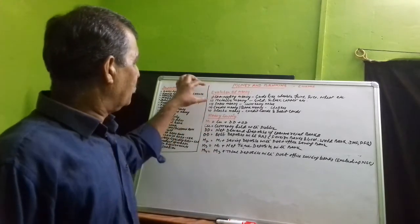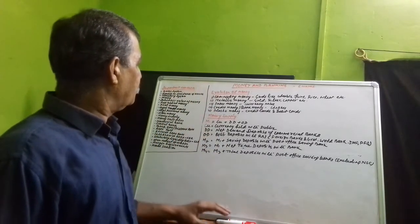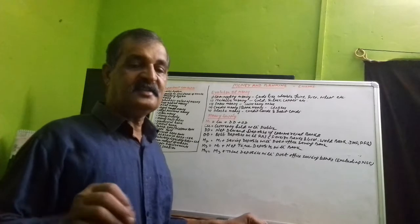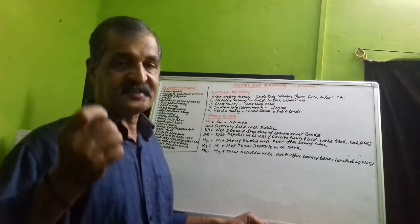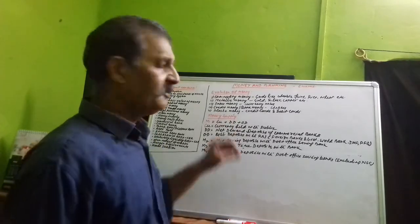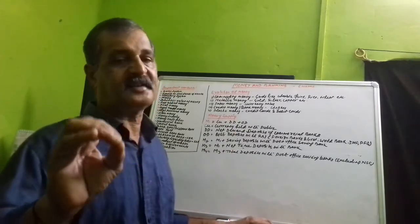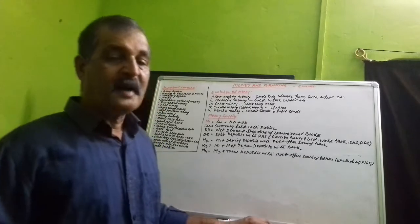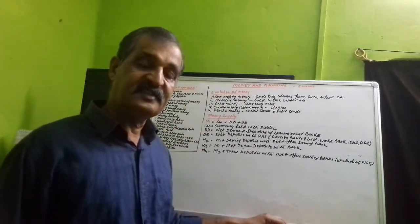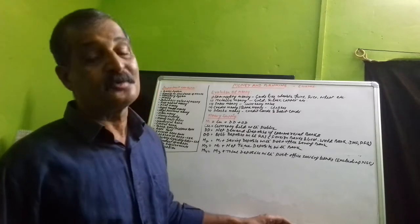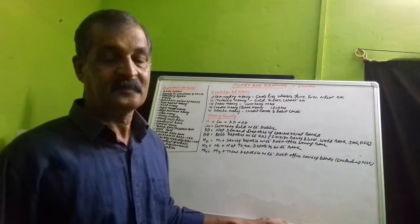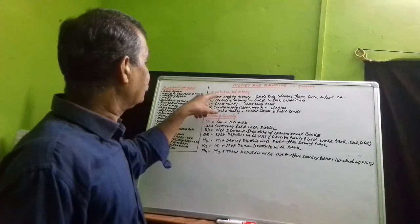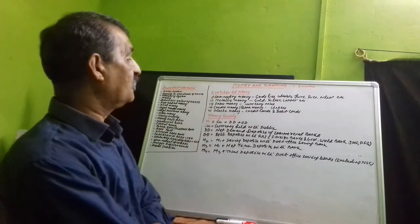First of all we talk about the evolution of money. Money is that what money does, as defined by Walker. Money वही चीज़ है जो money का काम करता है — that is money. In the barter system, exchange was goods to goods, commodity to commodity. Therefore, that system of exchange was commodity to commodity — that is why money was known as commodity money.